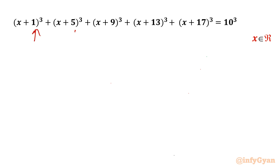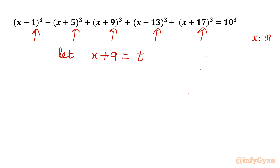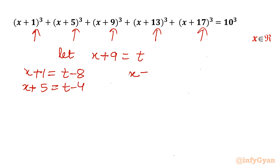As you can see the values are 1, 5, 9, 13, 17. The central value is 9, so I will write x plus 9 equal to t. Once x plus 9 is t, x plus 1 will become t minus 8, x plus 5 will become t minus 4, x plus 13 will become t plus 4, and x plus 17 will become t plus 8.